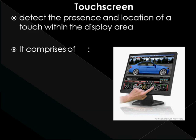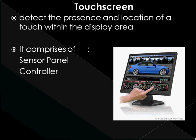First, a touch screen sensor panel that sits above the display and generates appropriate voltages according to where precisely it is touched. Second, a touch screen controller that processes the signals received from the sensor and translates these into touch event data, which is passed to the PC's processor, usually via serial or USB interface. Third, a software driver that provides an interface to the PC's operating system and translates the touch event data into mouse events, essentially enabling the sensor panel to emulate a mouse.